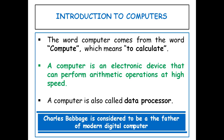A computer can accept input which may be either data or instructions or both. The computer remembers the input by storing it in memory cells. It then processes the stored input by performing calculations or by making logical comparisons, and gives out the result as output information. The computer accepts input and outputs data in alphanumeric form. Internally it converts the input data into binary digits, performs operations on the binary data, and transforms the result back to understandable alphanumeric form.